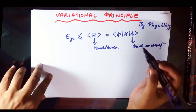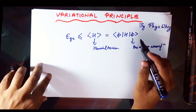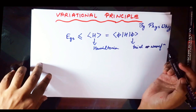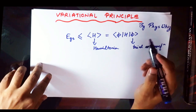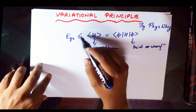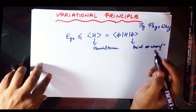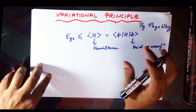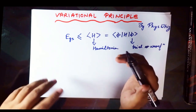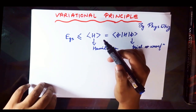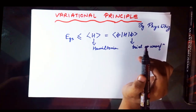The variational principle gives us an upper bound on the ground state energy of the system. If we guess a trial wave function phi which is exactly the ground state wave function, we get rid of the inequality sign and obtain the ground state energy exactly. However, if the trial wave function is close to the actual wave function, we get a pretty good approximate upper bound on the ground state energy.